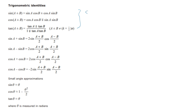Here are all the trig identities on the formula sheet. Know how to use these to get your double angle formulae - just set a and b to be the same angle. For small angle approximations, look at questions on these because there were quite a few examples in the topic tests and none appeared on Paper 1. Remember that theta must be measured in radians.